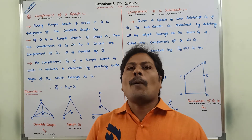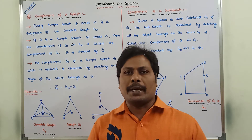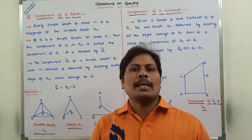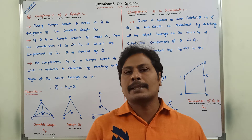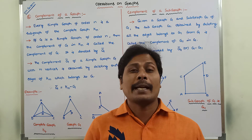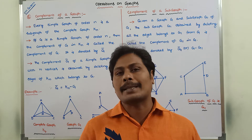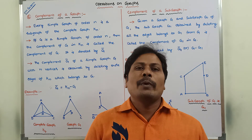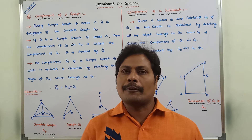The last operation is the complement operation. In the complement operation, there are two types: one is the complement of a graph, and the second one is the complement of a subgraph. First, we go for the complement of a graph.